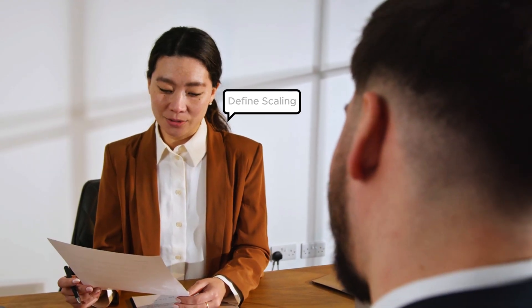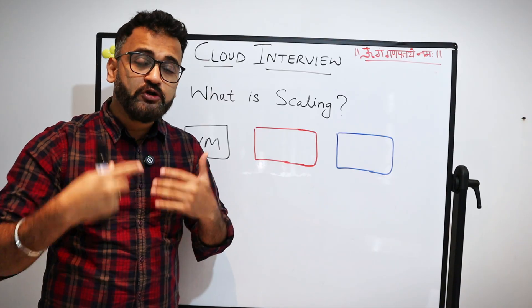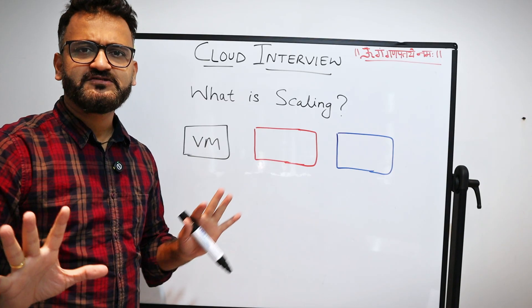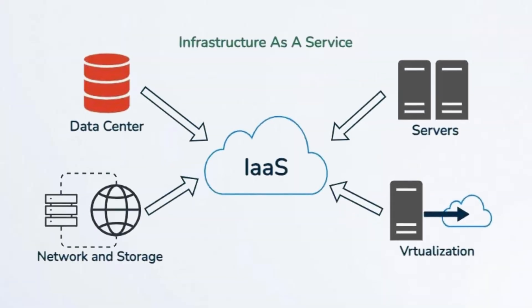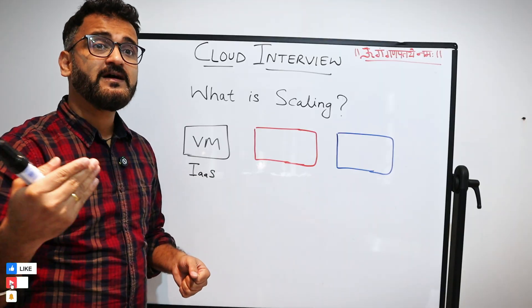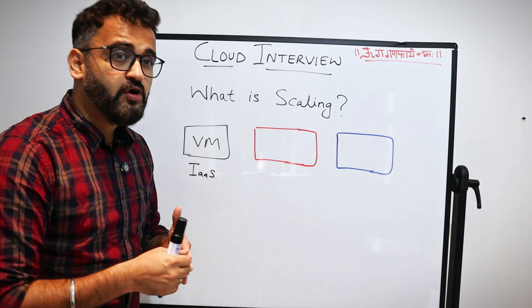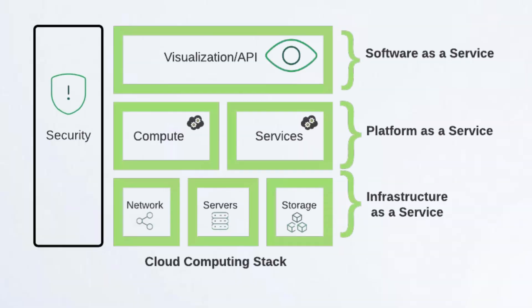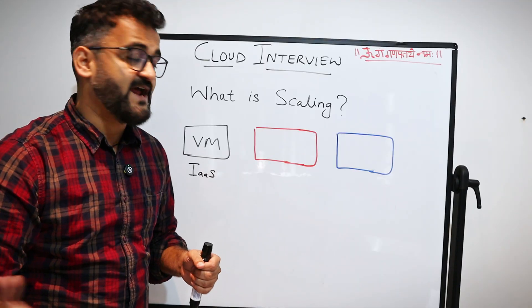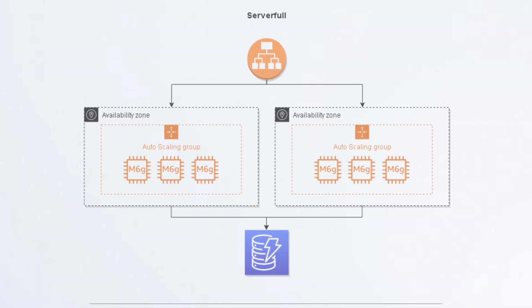If you are going for a cloud interview for a role such as cloud engineer or cloud architect, it is almost certain that you will be asked something around scaling. By default, we start answering this question from a VM perspective — saying scaling is auto scaling to increase the capacity of a VM by adding CPU as load increases. That is normal beginner stuff, and this comes under infrastructure as a service.